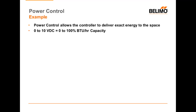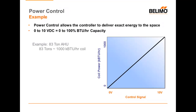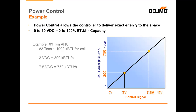Let's take a look at an example of how it works. Assuming we have a 0 to 10 volt signal, that would correspond to 0 to 100% of the BTUs per hour capacity. If we had a 1000 kiloBTU per hour coil and I sent a control signal of 3 volts, that would relate to 300 kiloBTUs per hour. Seven and a half volts simply equals 750 — it makes it quite simple to control our space. Now each time the control signal is modulated, 10% more control simply means 10% more heat exchange into the space.